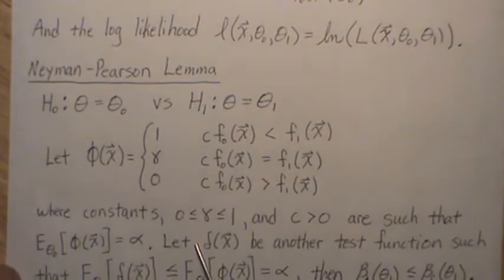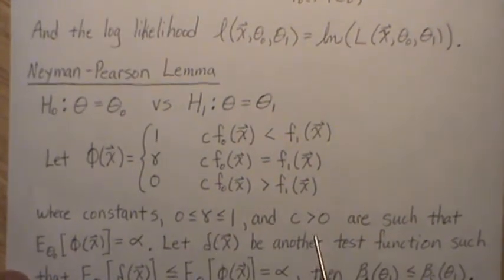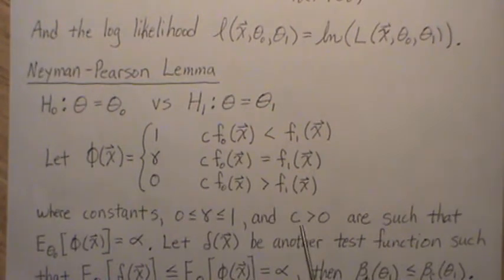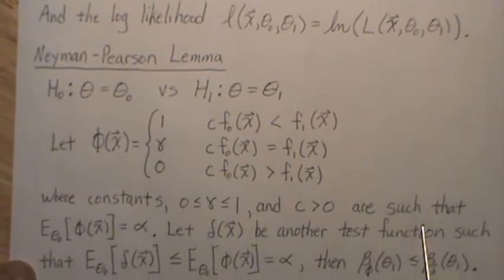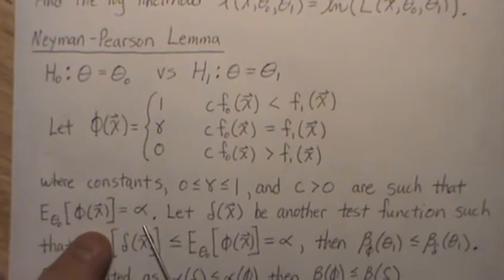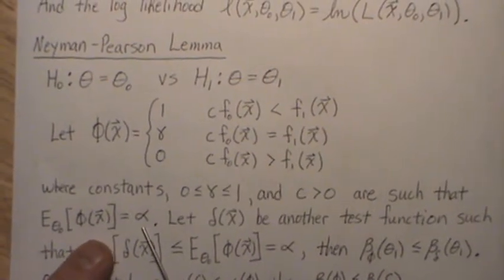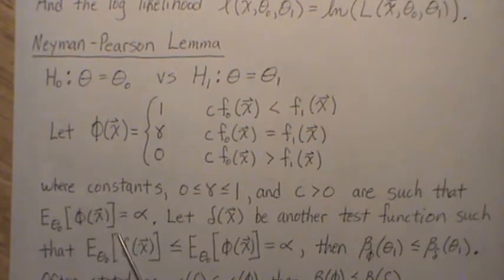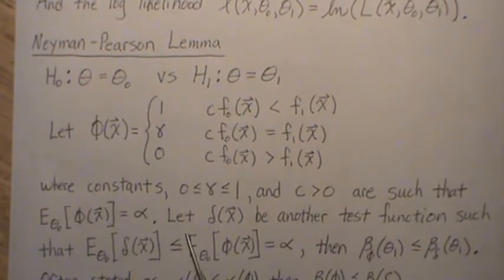So we have known constants gamma and positive real valued number c, such that the size of the test is alpha, and we defined this quantity in the previous videos in this little playlist.